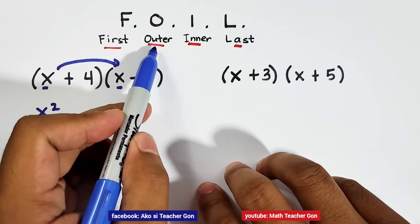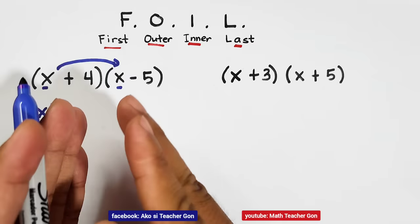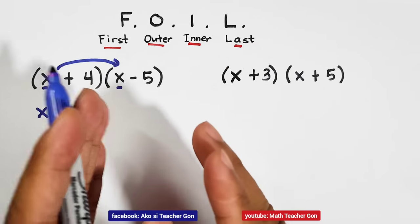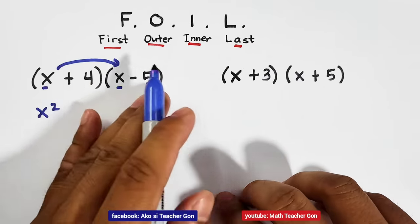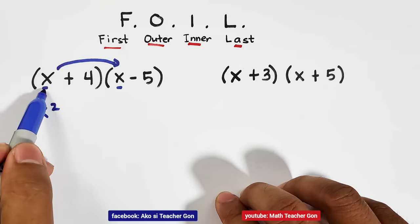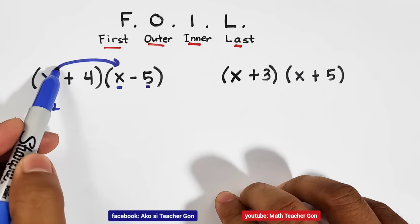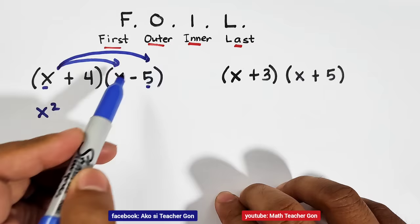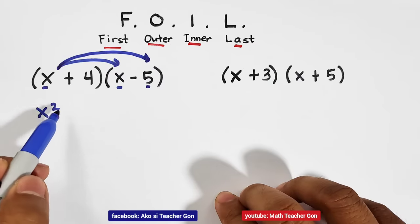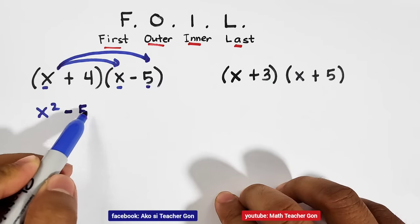Next, the outer terms. The outer terms are the terms on the left and right side of these given binomials. We have the x and 5. So let us multiply them. x times negative 5, and the answer is negative 5x.